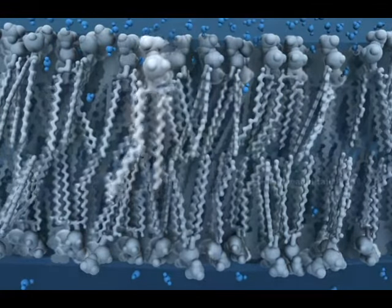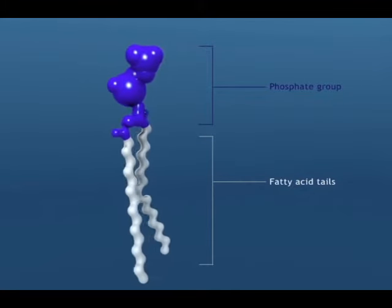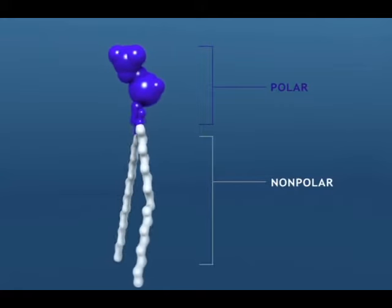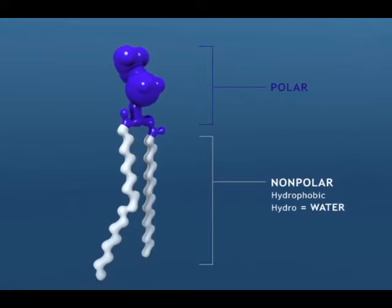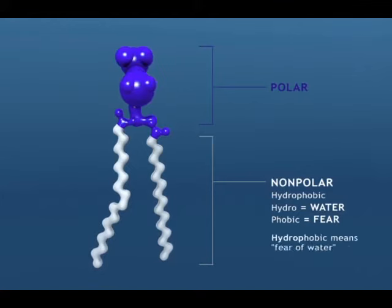Each phospholipid is made up of a phosphate group and two fatty acid tails. The hydrocarbon tails are nonpolar, unable to bond with water, and are hydrophobic. The polar phospholipid head has an affinity for water, and thus is hydrophilic.